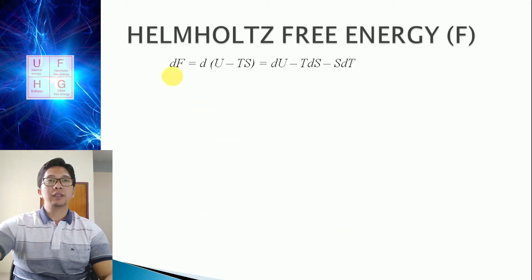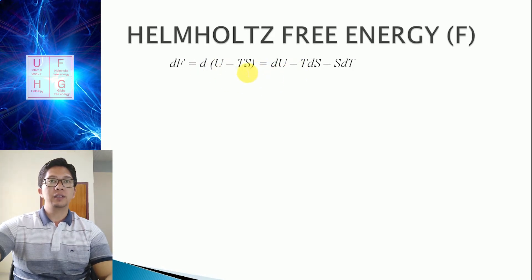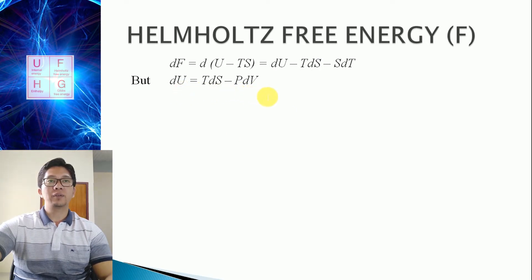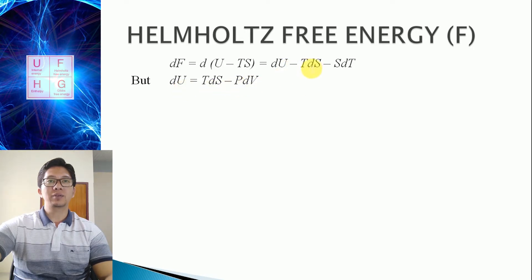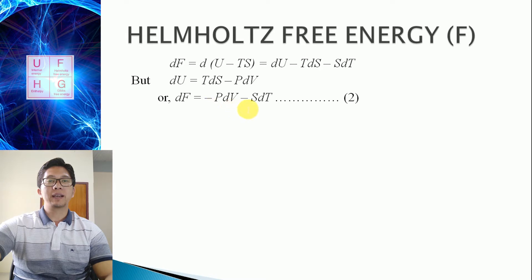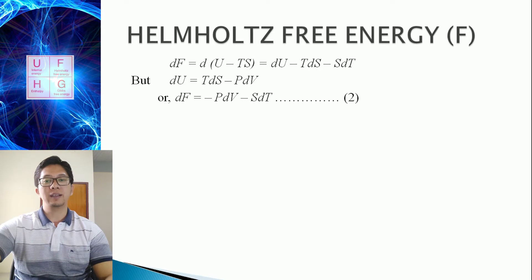For the differential of F: DF equals DU minus TDS minus S·DT. We know that DU equals TDS minus PDV, so substituting, TDS cancels out, giving DF equal to minus PDV minus S·DT. This is equation 2, the change in Helmholtz free energy.